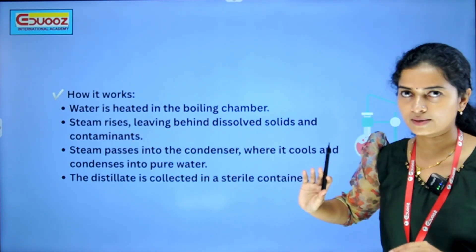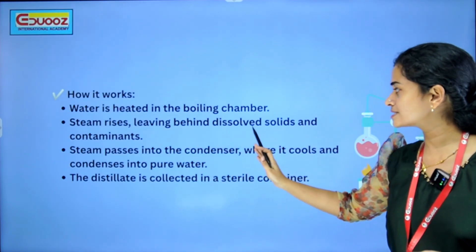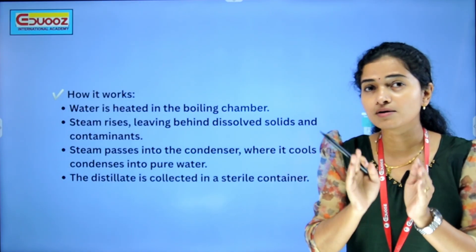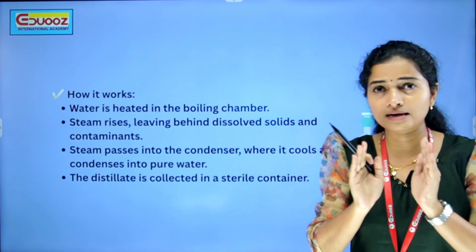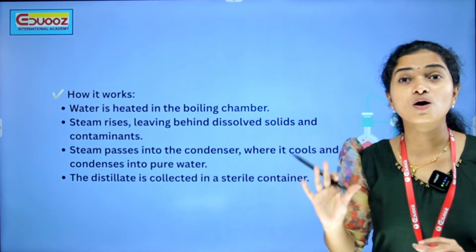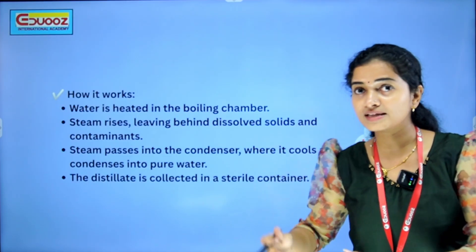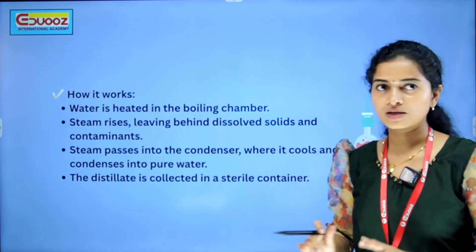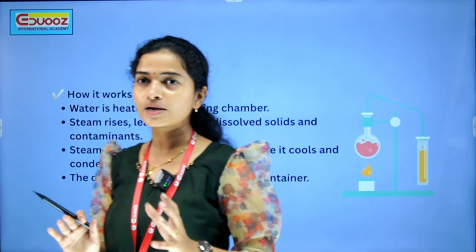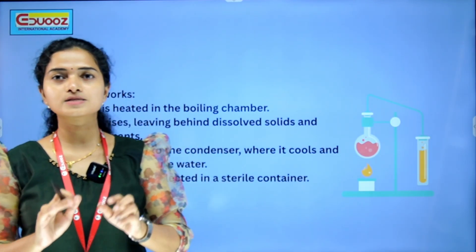How it works: water is heated in the boiling chamber. Steam rises, leaving behind dissolved solids and contaminants — those dissolved solids and contaminants stay back. Steam then passes into the condenser, cools, and condenses into pure water. We collect it in the distillation flask — the distillate is collected in a sterile container. You can see this process in the picture.